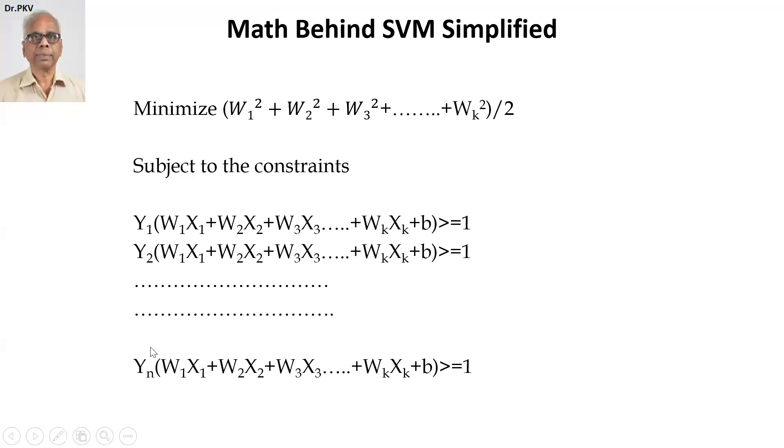Like that, etc. If there are N data points, I put here Yn into W1 X1 plus W2 X2 plus W3 X3, etc., plus Wk Xk plus B greater than or equal to one. Now, there are N constraints. That means there is an objective function, which is to minimize the distance margin, W1 squared plus W2 squared, etc., plus Wk squared divided by two.